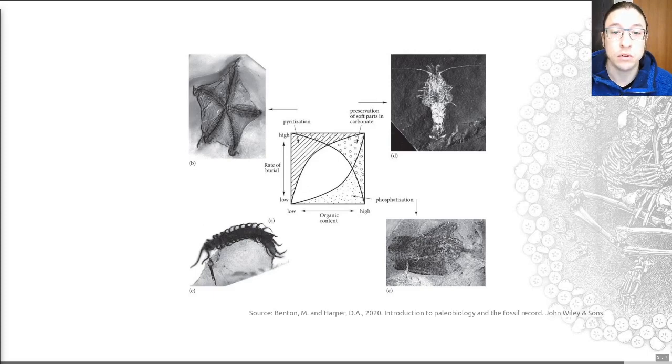Factors that lend themselves towards each type of mineral are shown on this diagram here. Overall, the form of mineralization depends on the nature of the original tissue, the rate of burial, the organic content, and the salinity. And so, for example, you can see based on this diagram that if we have high organic content but low rate of burial, we may well see phosphatization. If, however, with high organic content we have a high rate of burial, we can often preserve soft parts in a form of carbonate, be that calcium carbonate or another carbonate. And low organic content and high rates of burial lend themselves towards pyritization. So that's what this diagram is showing you.